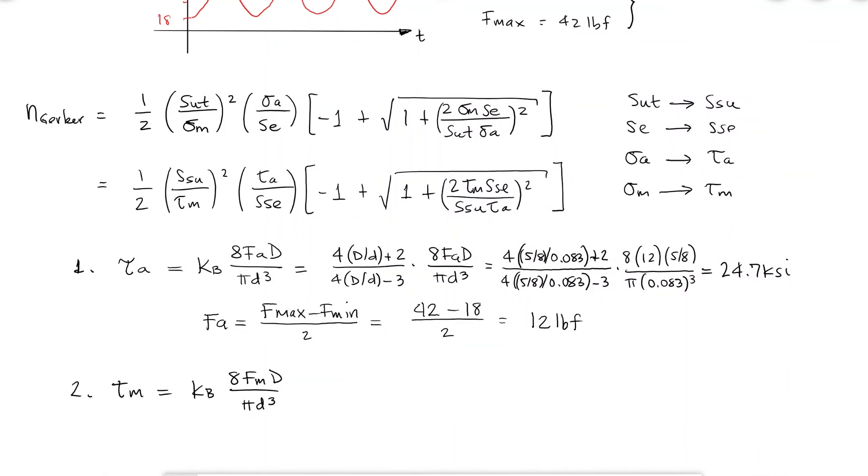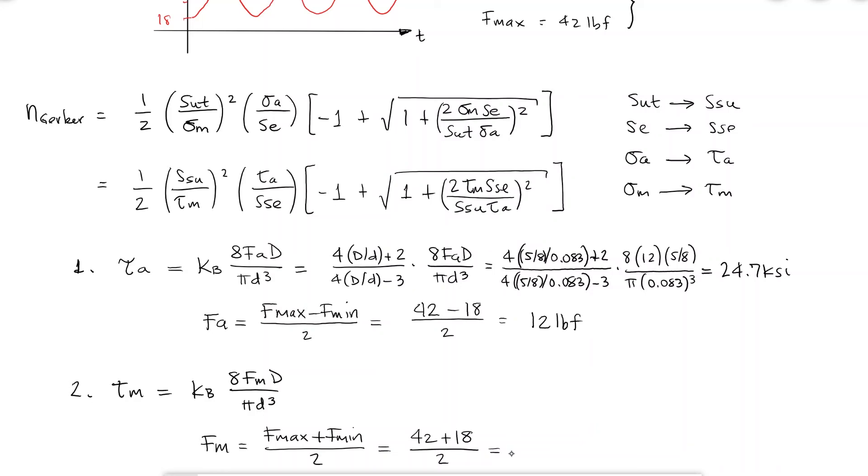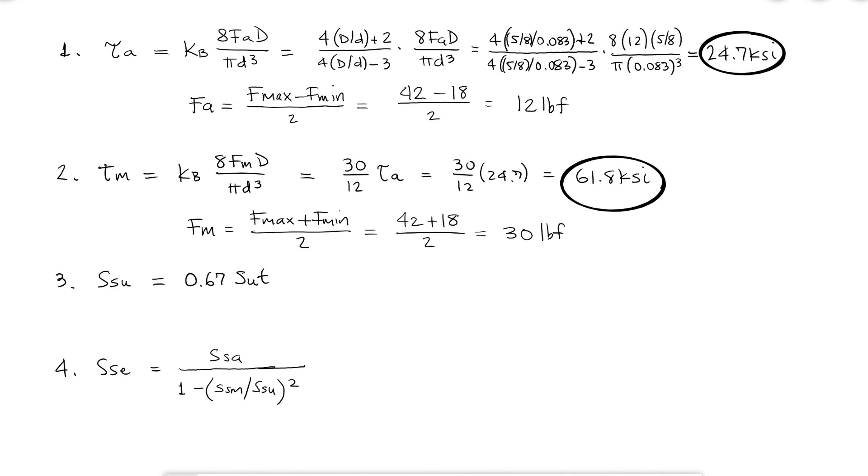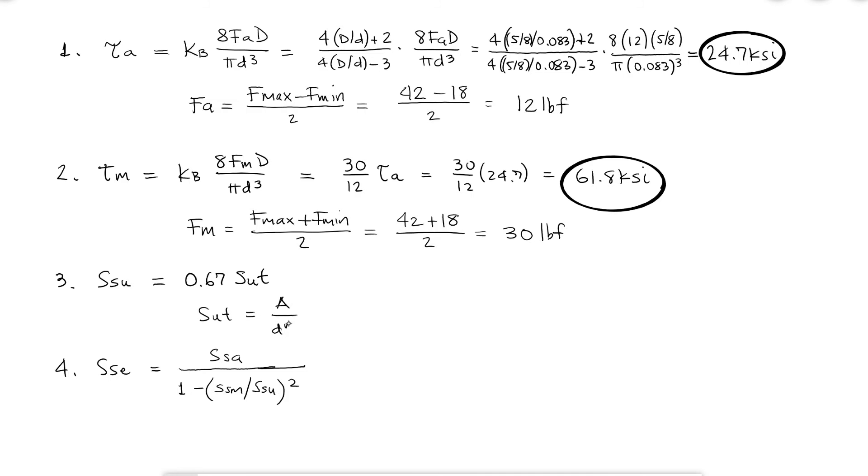For the mean shearing stress, I would need the mean or average force, and since nothing else changes besides the force, I know the mean shearing stress would be 30 over 12 the alternating shearing stress. Moving on to the torsional modulus of rupture, SSU, I would first need to calculate the tensile strength for 302 stainless and the wire diameter of 0.083 inches.